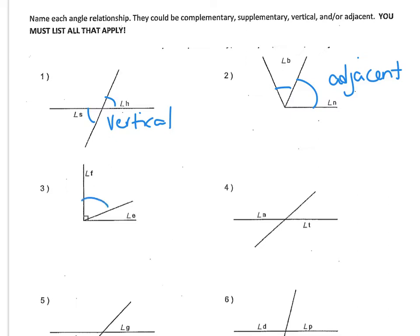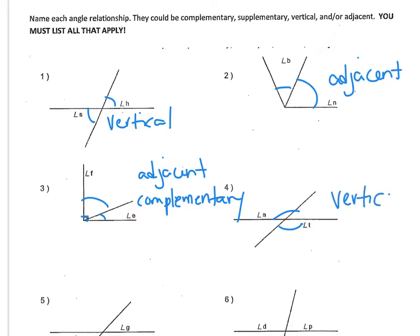Number 3, F and E are right next to each other, so those are adjacent. And if you notice from the picture, they have the right angle symbol in here, so they are also complementary because they form a right angle. And number 4, angle B and angle T are formed by intersecting lines and they're opposite of each other, so those are vertical angles.